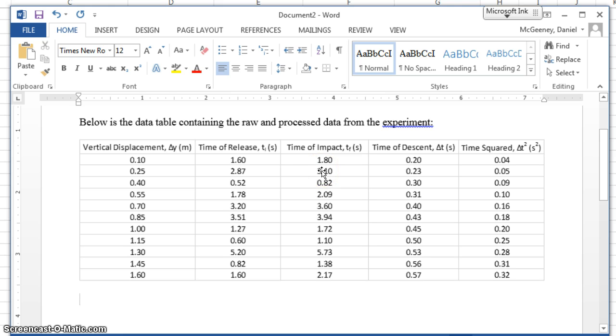Next, you need to introduce briefly your graph. Below is the graph of, and the way you introduce a graph is you say the y-axis quantity against and then you list the x-axis quantity second. So, let me try it. My y-axis quantity is vertical displacement against time squared.